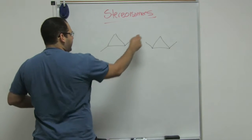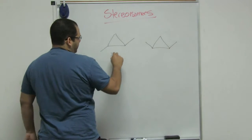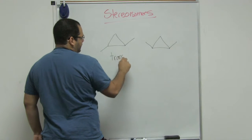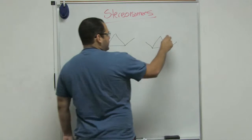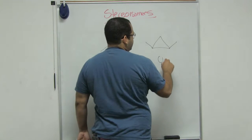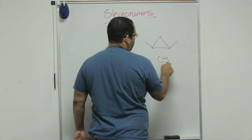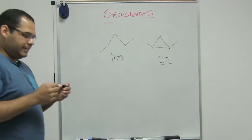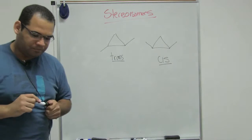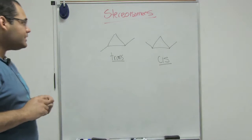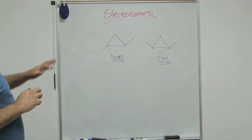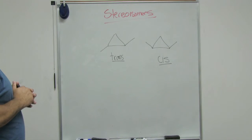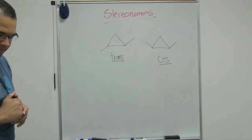So here we can start arriving at the idea about cis and trans. Because one is down and the other one is up, I can call this a trans. And when both are pointing up or both pointing down, that would be my cis. So cis and trans is one example of stereoisomers.